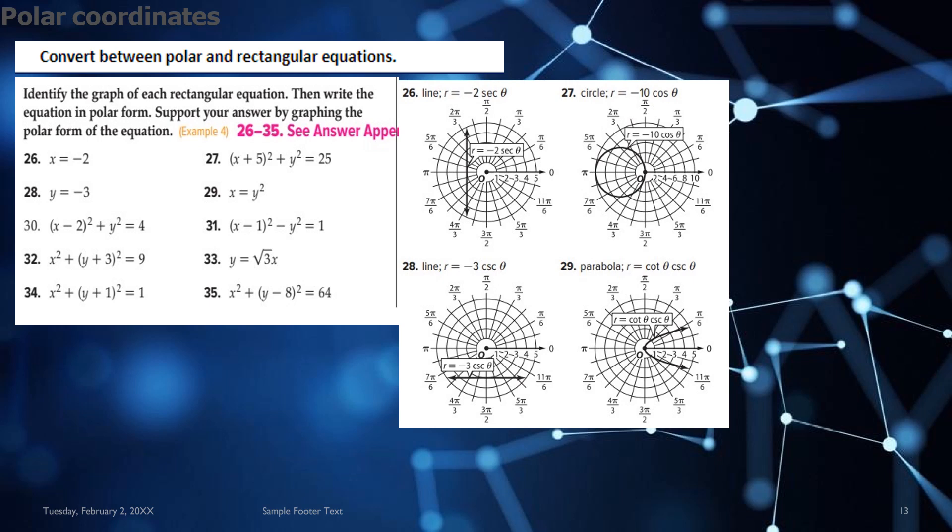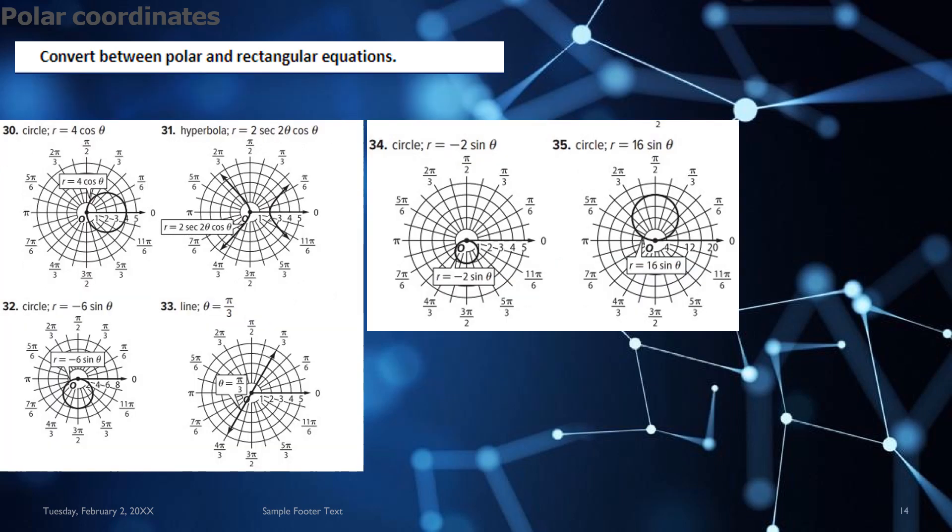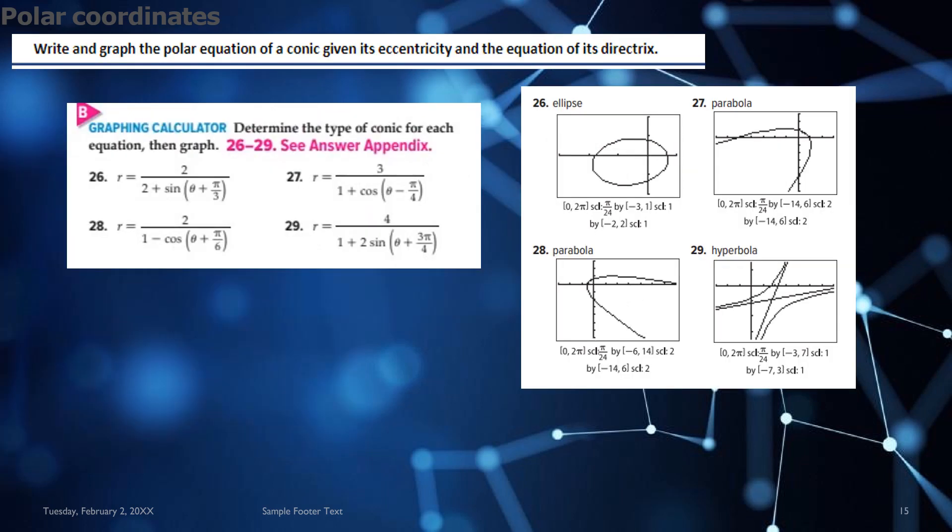Question 26, 27, 28 and 29, the solution is here. For question 30 to 35, the graph is here where you convert between polar and rectangular equation followed by the graphing calculator question. You can use calculator for this question where 26 to 29, you have to write and graph the polar equation of a conic given its eccentricity and equation of the directrix. So here you see the ellipse. Here you see the hyperbola. Sorry, the parabola. Here you see the parabola. Here you see the hyperbola. So question 26 to 29 can be done using a graphing calculator. And these are the solutions you are going to get for this.